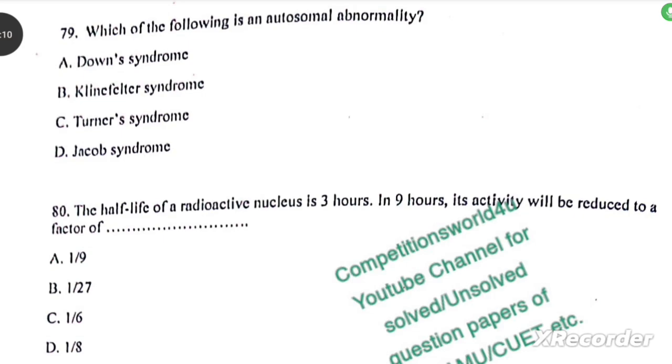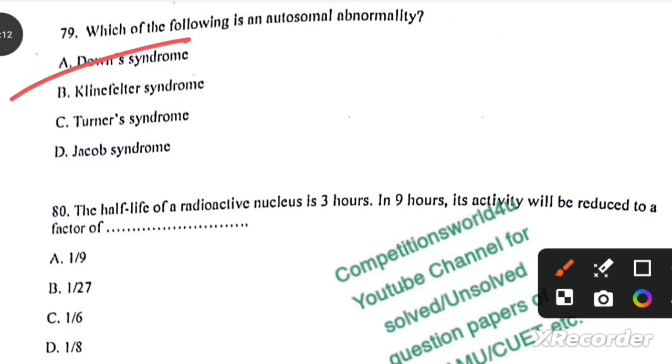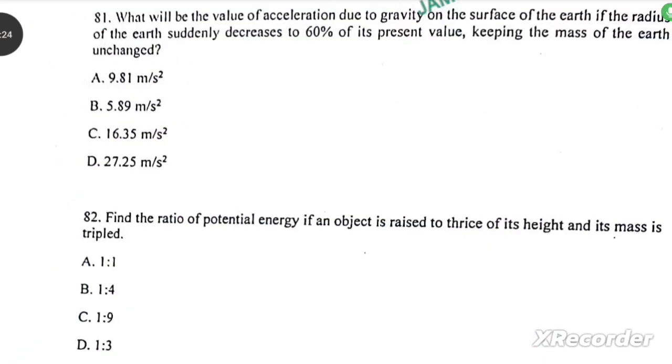Which of the following is an autosomal abnormality? Down syndrome. The half life of a radioactive nucleus is 3 hours. In 9 hours, its activity will be reduced to a factor of 1 by 8. What will be the value of acceleration due to gravity on the surface of the earth if the radius of the earth suddenly decreases to 60% of its present value, keeping the mass of the earth unchanged?